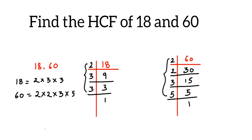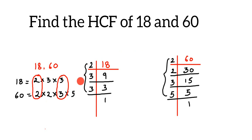Now we're going to start pairing — take the common prime factors and pair them up. For this 2 I got this 2, and for this 3 I got this 3. You can see that this factor of 3 doesn't have any other pair from the factors of 60. Similarly, for this 2 and 5, there is no pair here.